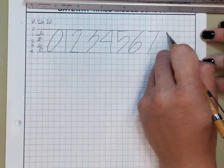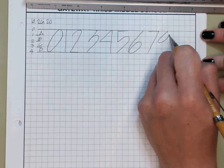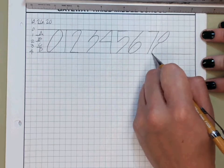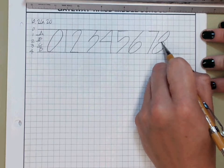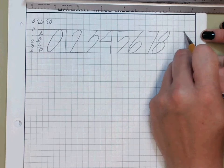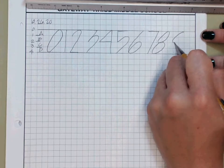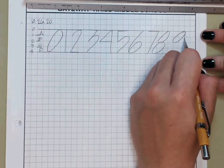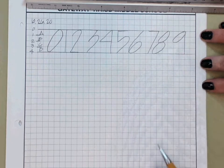Your eight is going to be two circles — from your zero to your second quarter, and from your second quarter to your fourth quarter back to your second quarter. And then your nine is going to be from your zero to your second quarter, loop it around a circle, and then your vertical line is from your zero to your fourth quarter.